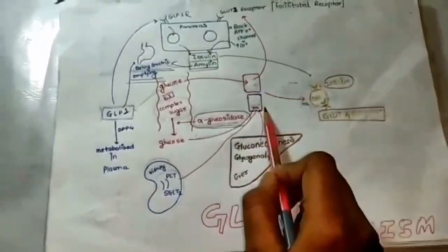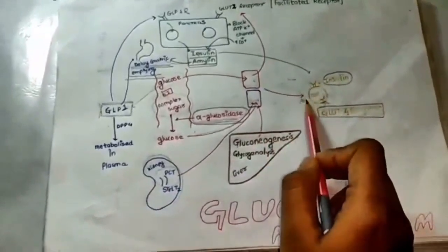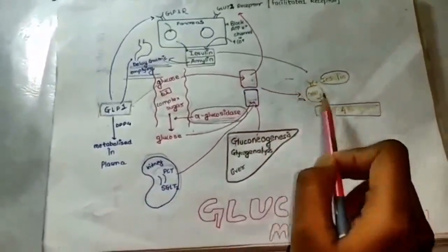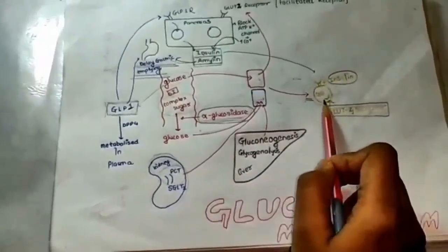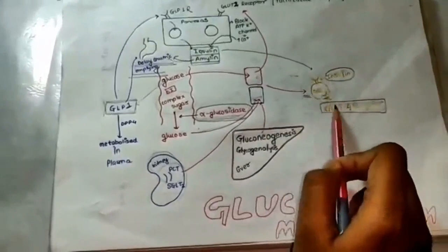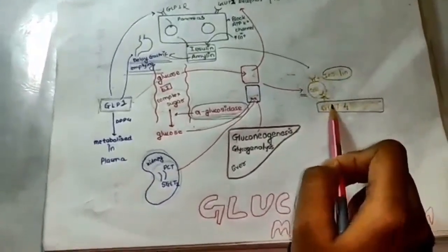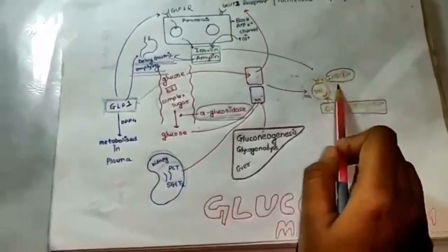After going into the metabolic circulation, this is further utilized by the peripheral cell with the help of a receptor called the GLUT4 receptor. But this GLUT4 receptor is present inside the cell. So how is the glucose exposed to GLUT4 receptor? With the help of insulin. Now, how is insulin secreted?